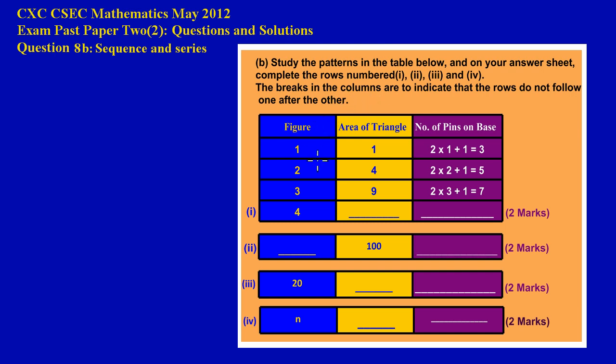Now here we have the table. In the first column, the blue column, we have the figures. In the second column, the yellow column, we have the area of triangle. And in the third column, the purple column, we have the number of pins on the base.